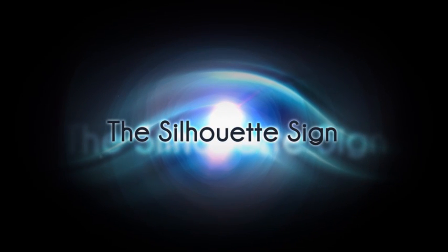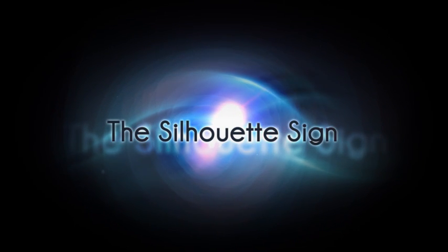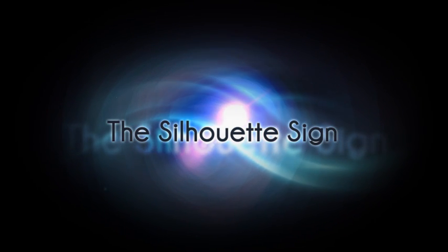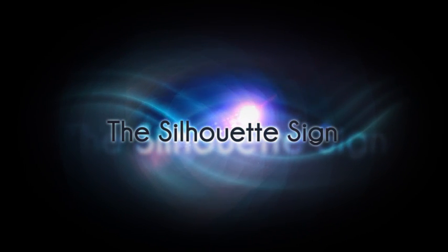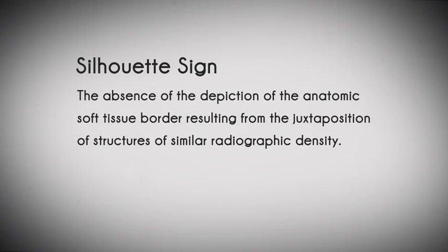This short tutorial introduces the silhouette sign, one of the most important diagnostic signs used in radiology. The silhouette sign is defined as the absence of the depiction of the anatomic soft tissue border resulting from the juxtaposition of structures of similar radiographic density. It can also mean the absence of a normal silhouette.